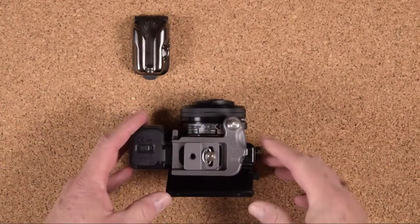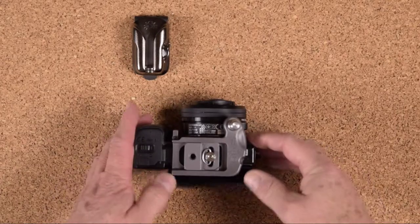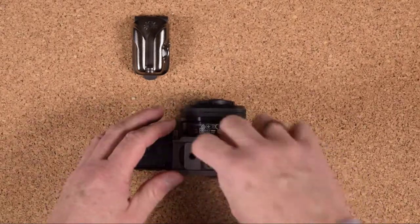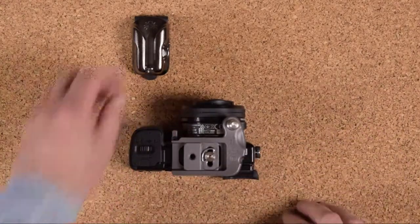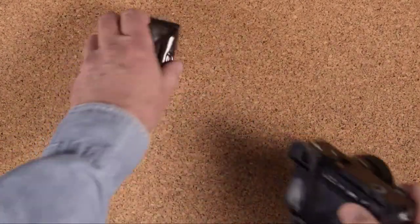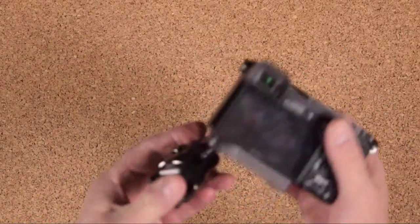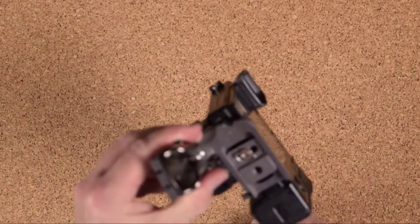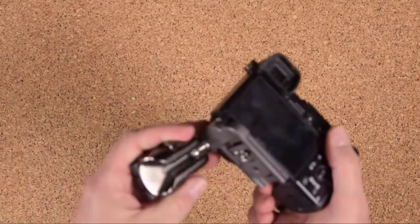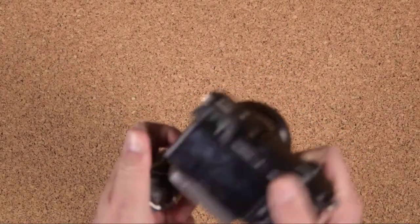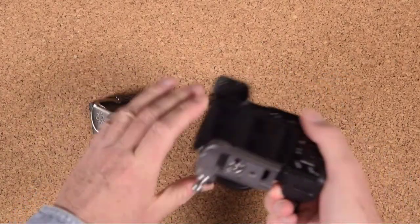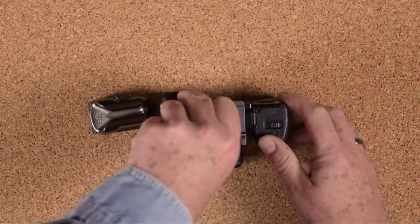Once you snug it down, you don't have to worry about it interfering with the LCD flip-out panel either. So once this is on your belt, the camera will just hang like so. It'll take in and out freely unless you set the locking mechanism, and then it's not going to release.